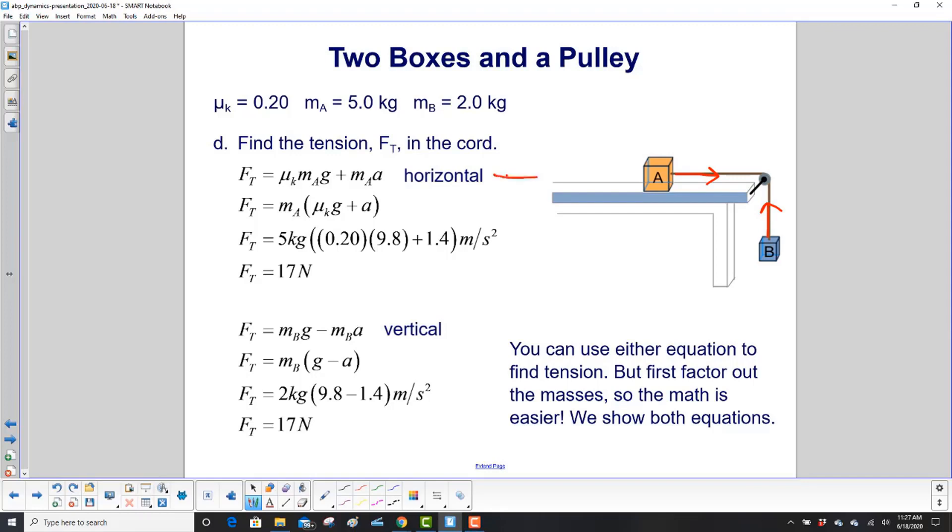So the horizontal, which is box A, here's our equation for tension. And look, what's the first thing we do? We don't just put the numbers in. We factor out M sub A. So we say that down here, factor out the masses so the math is easier. You plug in your numbers again and we get 17 newtons.